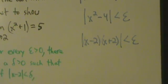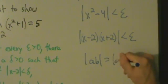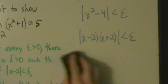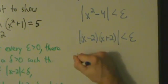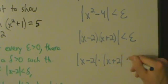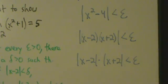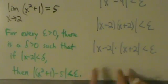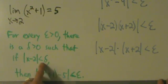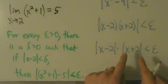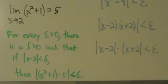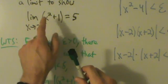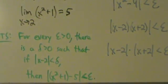Just like in example 2, we use the property that the absolute value of AB equals the absolute value of A times the absolute value of B, so we can split the absolute values. This gives us absolute value of x minus 2 times absolute value of x plus 2, less than epsilon. We're kind of on the right track, because we want absolute value of x minus 2 to be less than delta. But this x plus 2 is ruining things for us — even just introducing x squared makes this more complicated than the earlier examples.